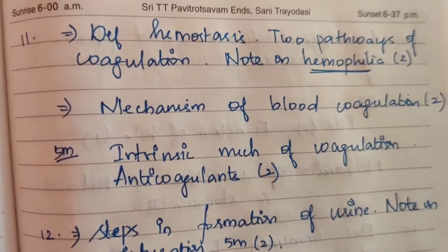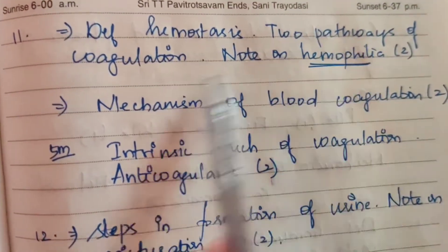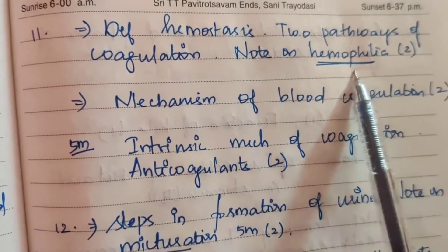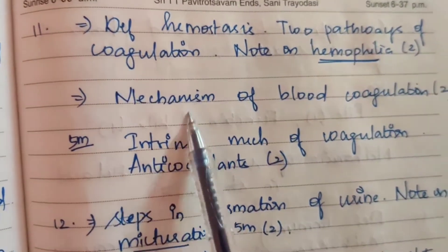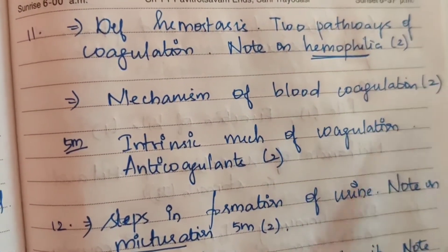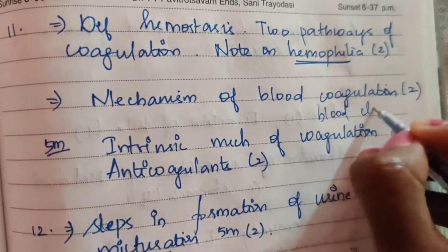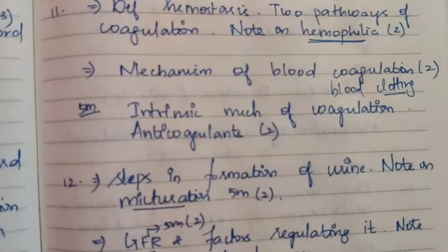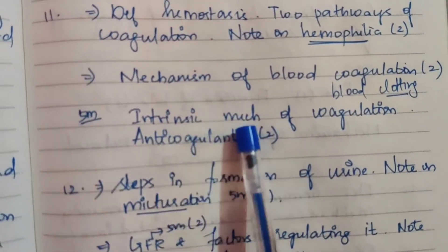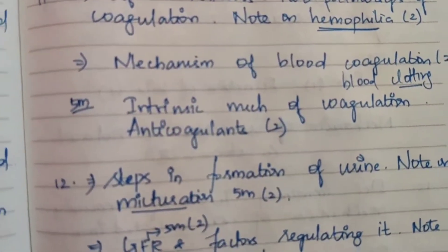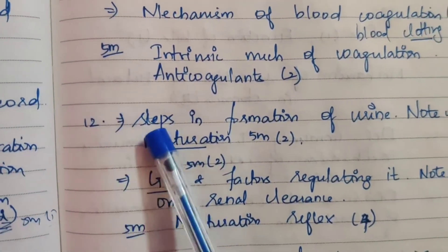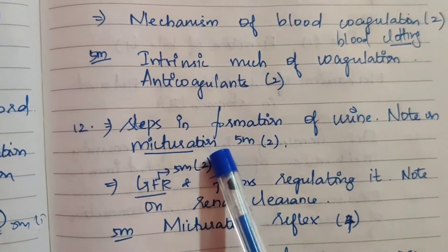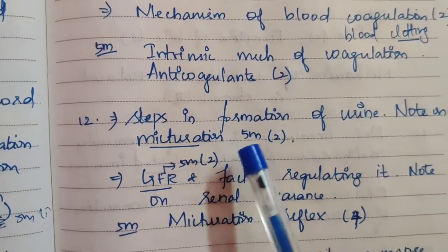Eleventh question: Define hemostasis, describe two pathways of coagulation, and note on hemophilia — for 15 marks. Hemophilia alone is a 5-mark question. Mechanism of blood coagulation — 15 marks. Intrinsic mechanism of coagulation — 15 marks. Anticoagulants — asked two times, also a 15-mark question.